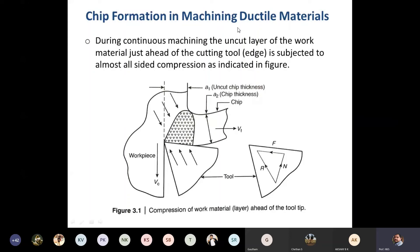We consider chip formation in machining ductile materials. During continuous machining, the uncut layer of the work material just ahead of the cutting tool is subjected to almost all-sided compression, as indicated in the figure. This figure represents the formation of chips during machining operation. This is the work material, this is the uncut chip or layer of the work material, and after machining this layer will be removed from the work material in the form of chips.